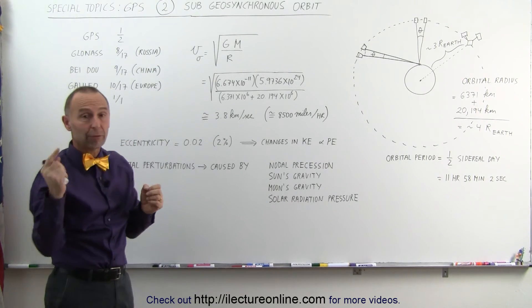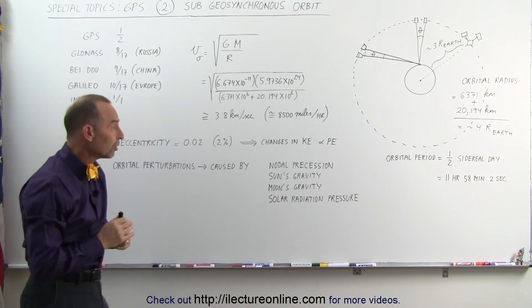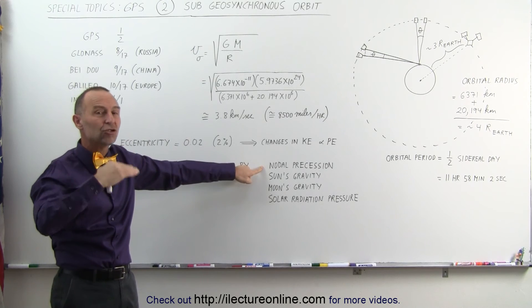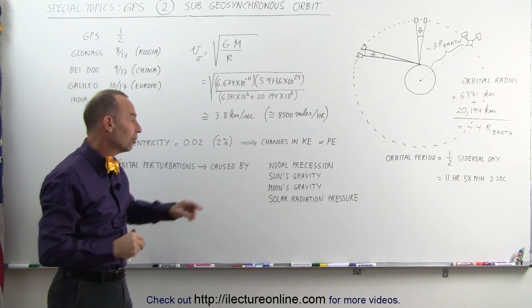They're angled at 55 degrees with the equator. There will be what we call normal precession. Because of the changes of the radius of the Earth.